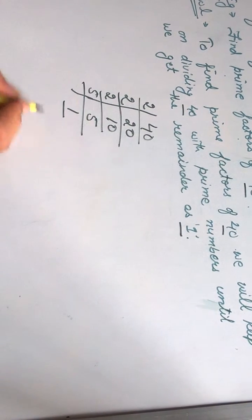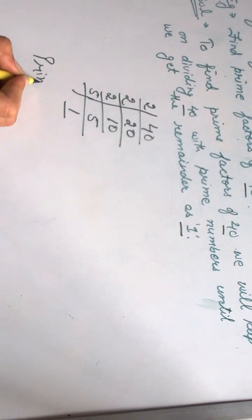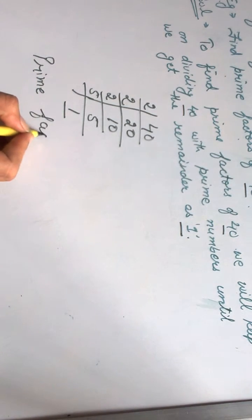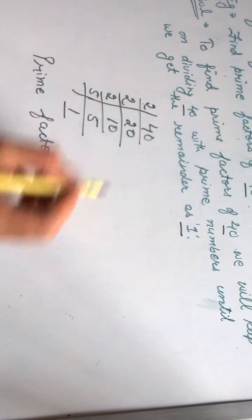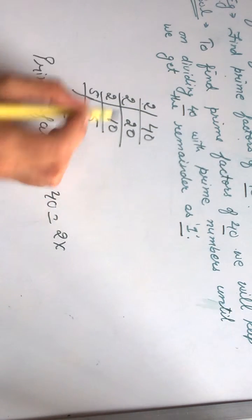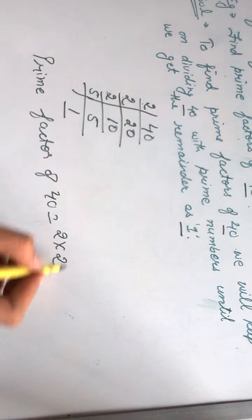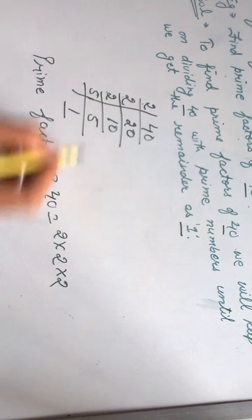So, the prime factors for 40 are 2 into 2 into 2 into 5.